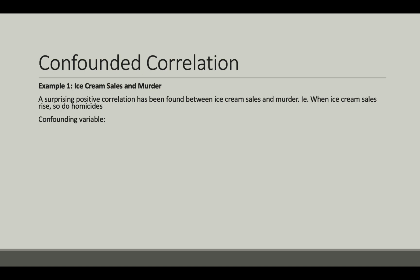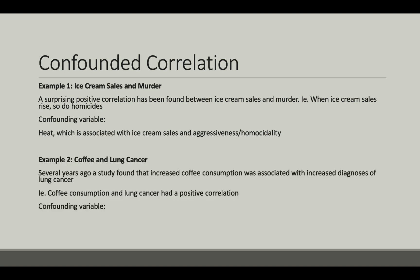Let's move on to our next category: confounded correlations. These are correlations in which the correlation is actually describing a relationship that is skewed by a third variable. In our example, ice cream sales and murder — a surprising positive correlation has been found between ice cream sales and murder. When ice cream sales rise, so do homicides. However, there's a confounding variable — heat — which is associated with both ice cream sales and aggressiveness and homicidality.